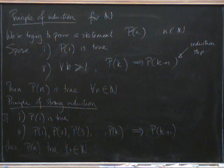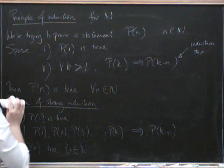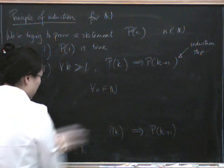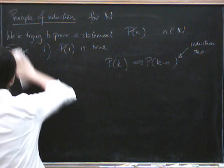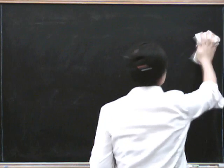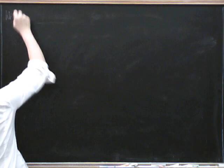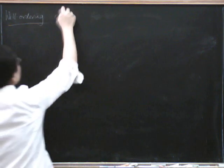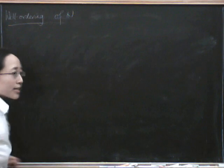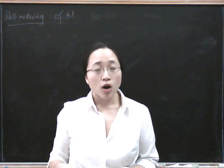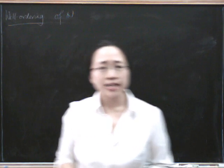So I'm going to show you that this is equivalent to the well-ordering property. The well-ordering of the natural numbers says that the natural numbers are well-ordered, which is to say that any non-empty set of natural numbers has a least element.